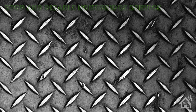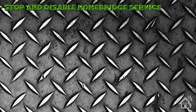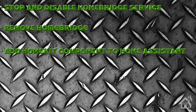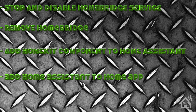Let's do a quick run through of what we're going to cover in this video. We're going to start by stopping and disabling the Homebridge service. If you don't have the Homebridge service you can skip past the first couple of steps. Once we've disabled that Homebridge service we're going to remove Homebridge. Once Homebridge is removed we're ready to add the new HomeKit component into Home Assistant, and then add Home Assistant into the Apple Home app on your phone. Lastly I'll show you what that looks like in action.